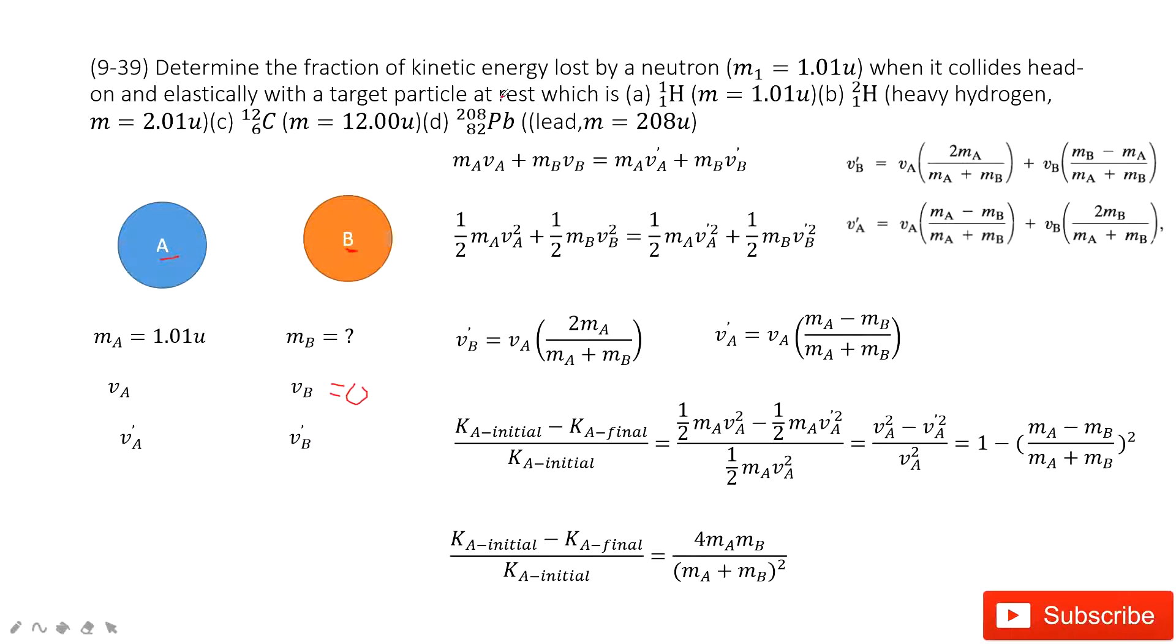And then VA plus, VB plus is unknown. So we need to find the fraction of kinetic energy lost by the A.